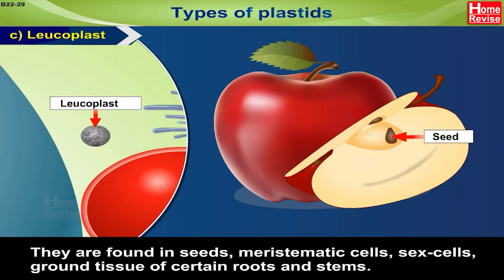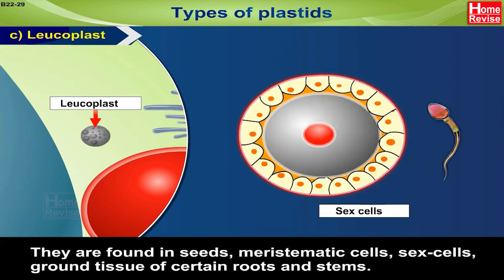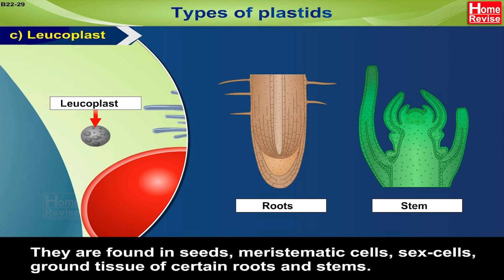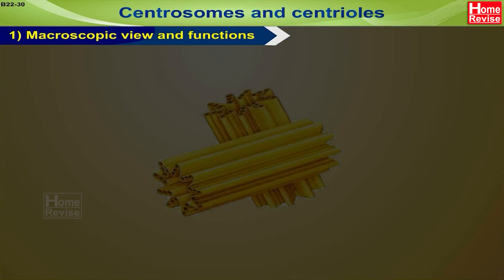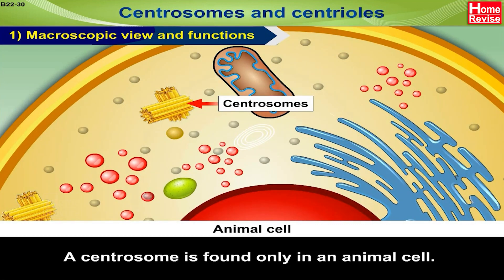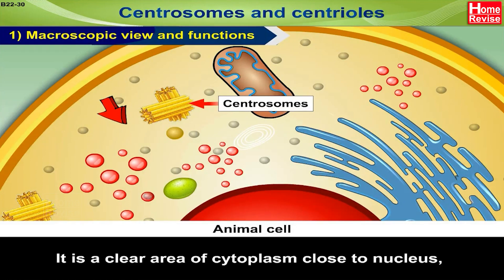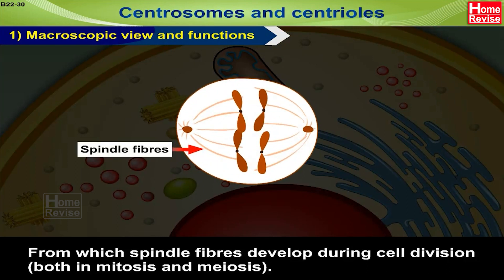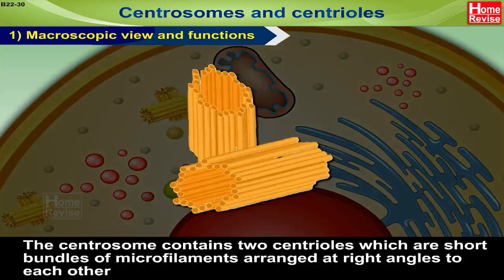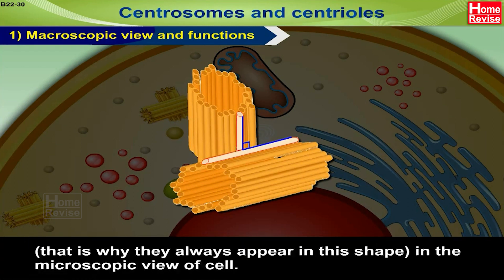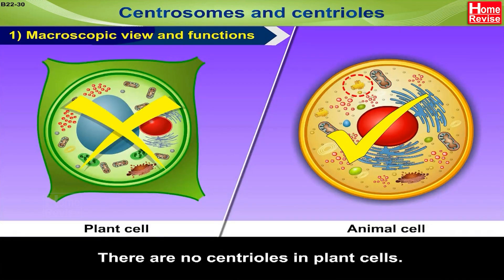Leukoplasts are found in seeds, meristematic cells, sex cells, and ground tissue of certain roots and stems. Centrosomes and Centrioles. A centrosome is found only in an animal cell. It is a clear area of cytoplasm close to the nucleus from which spindle fibers develop during cell division, both in mitosis and meiosis. The centrosome contains two centrioles which are short bundles of microfilaments arranged at right angles to each other. There are no centrioles in plant cells.